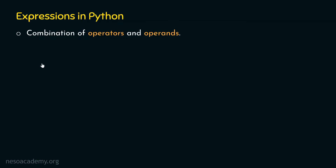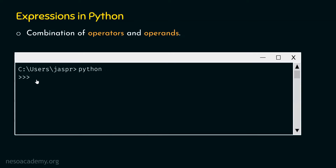For example, let's open our command prompt and activate the Python interactive shell. After activating the Python interactive shell, we are ready to type in the commands. Let's type x equal to ten and hit enter. X is now pointing to value ten. Now let's type x plus three. X plus three is an expression because it is a combination of operators and operands. We have two operands, x and three, and one operator, plus.